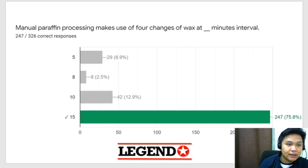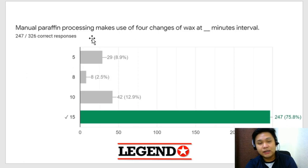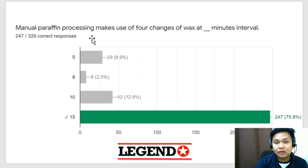Manual paraffin processing makes use of four changes of wax at 15-minute intervals. If you experienced manual tissue processing, dapat masasagot ninyo ito — four containers of paraffin wax, 15 minutes each container, total of 60 minutes.